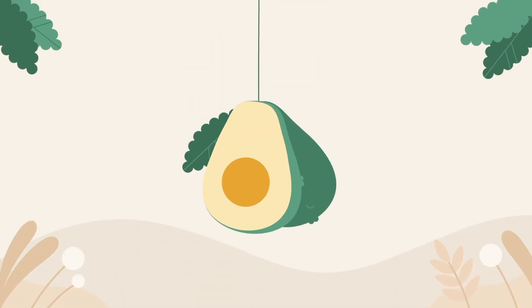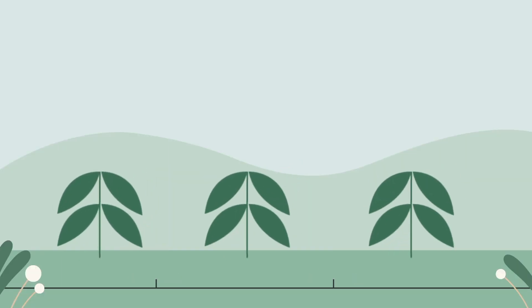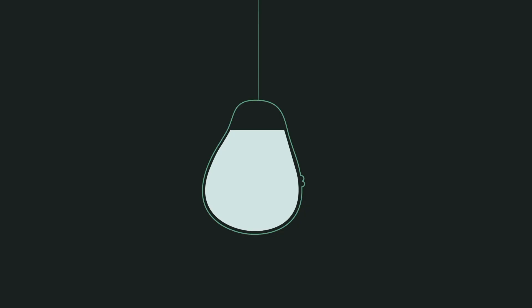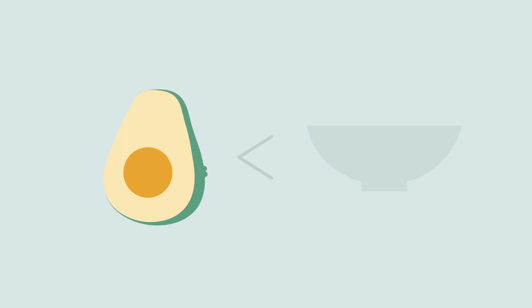The amount of water needed to produce a kilo of avocados in Spain is 700 litres on average. Technical improvements in irrigation over the last decade, as well as meticulous control of plant growth, have reduced this figure to below 400 litres per kilo at some farms. This amount may seem high, but it is less than that of other fruits.